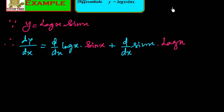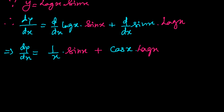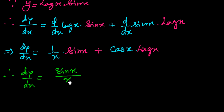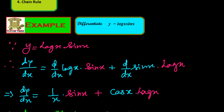So we see what happens: d y over d x equals the differentiation of log x, which is 1 over x, multiplied by sin x as it is, plus the differentiation of sin x, which is cos x, multiplied by log x as it is. Therefore, d y over d x is equal to sin x over x plus cos x into log x. In this way we can easily find the differentiation of a function which is the product of two sub-functions using the product rule.